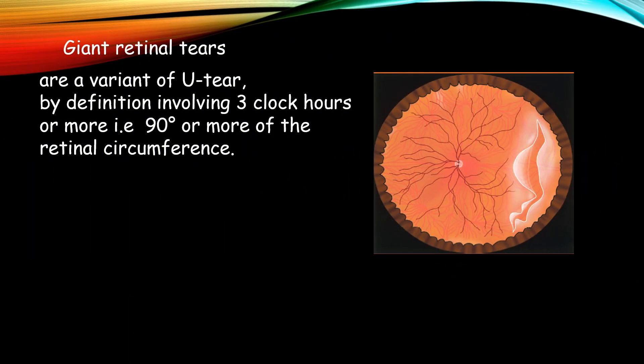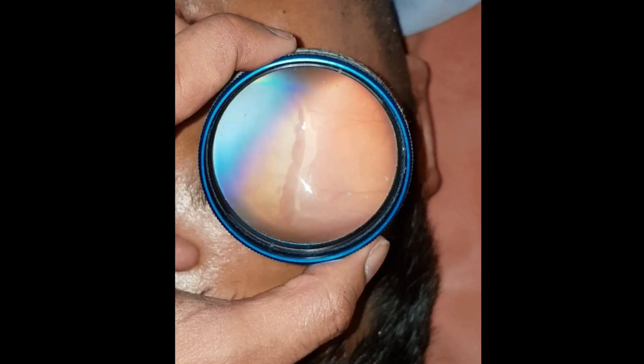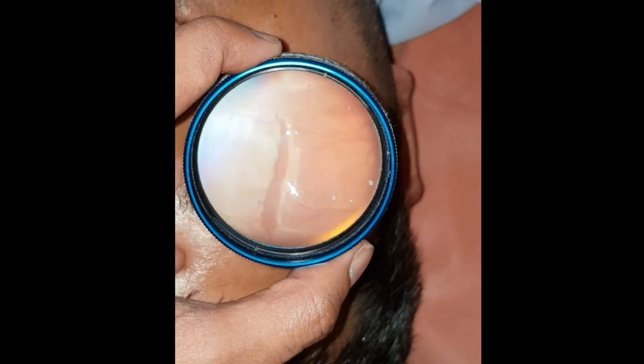Then we have the giant retinal tear, which by definition involves three clock hours or more of retinal circumference, that is 90 degrees or more. This is how it looks — a temporal giant retinal tear in a young male post blunt trauma.